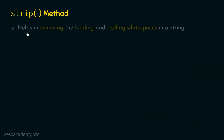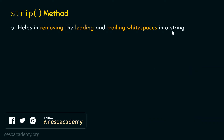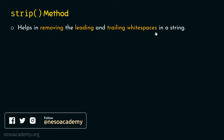Strip method helps in removing the leading and trailing whitespaces in a string. It is a string method that removes leading and trailing whitespaces by default. If we don't provide any arguments to the strip method, it removes the leading and trailing whitespaces from the string. In order to understand this concept, we need to consider one simple example.